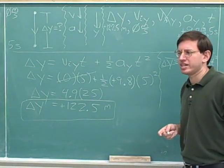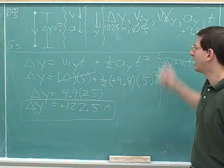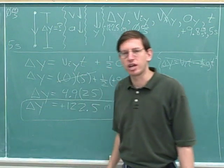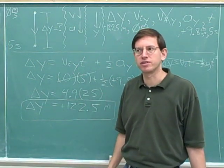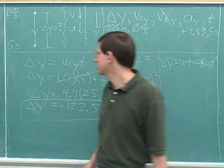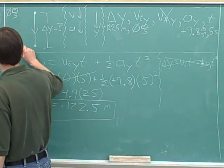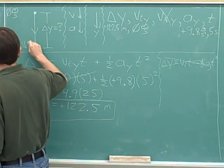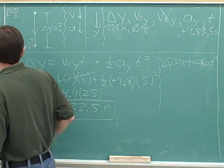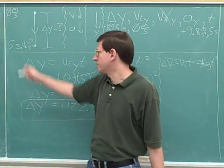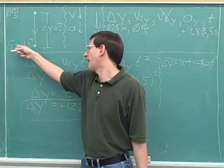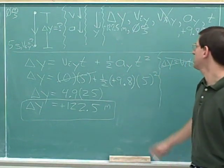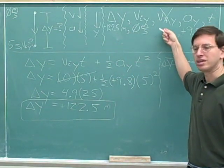Now suppose I also want to know what the velocity is going to be after 5 seconds — the velocity at this point. This is going to be the final velocity because it's after the 5 seconds have expired. Try to pause the video and figure out what this velocity is going to be.